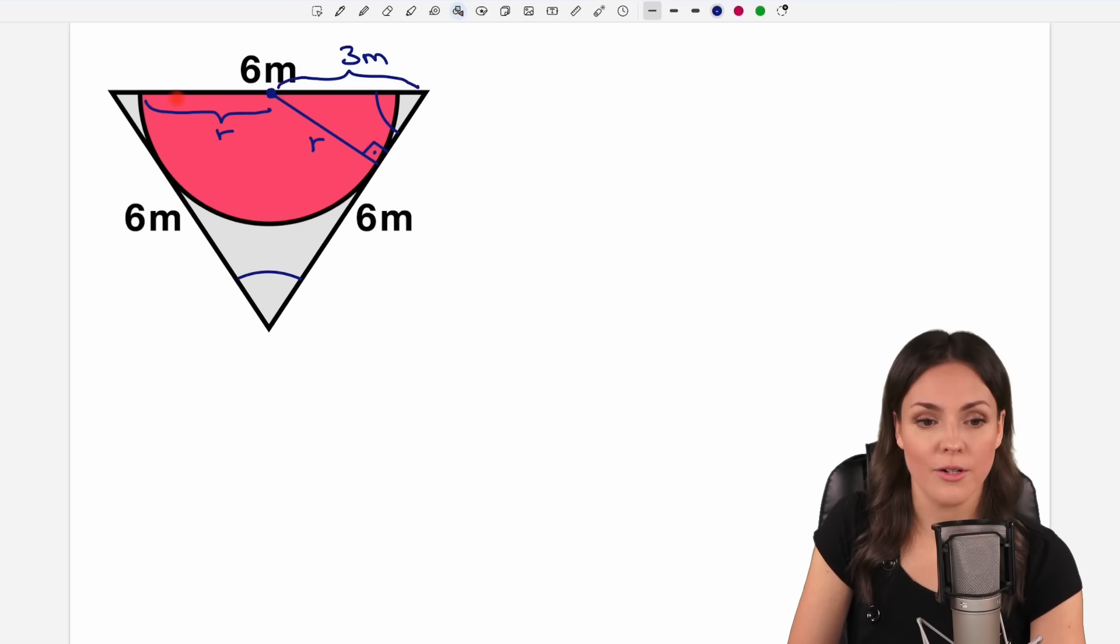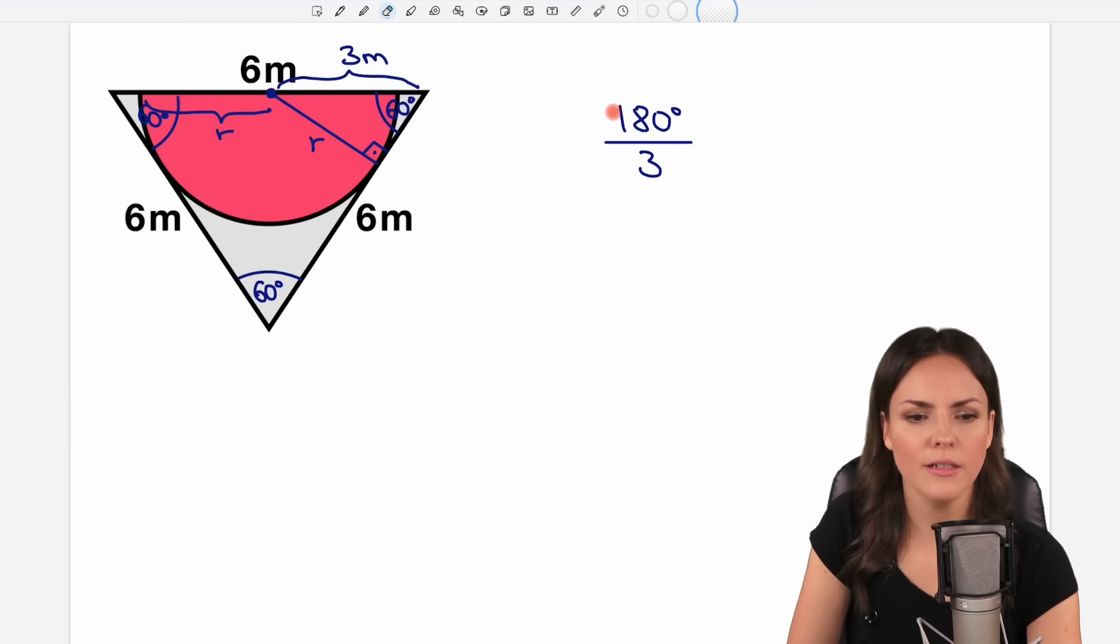In an equilateral triangle all angles are of the same size. So which size is this? Well if we add all three angles in a triangle we always get 180 degrees. So if all three angles are the same size we just have to take this number and divide it by three which equals 60 degrees for each angle in our triangle here.